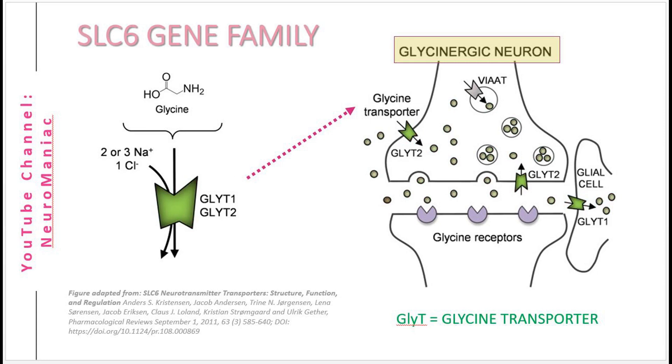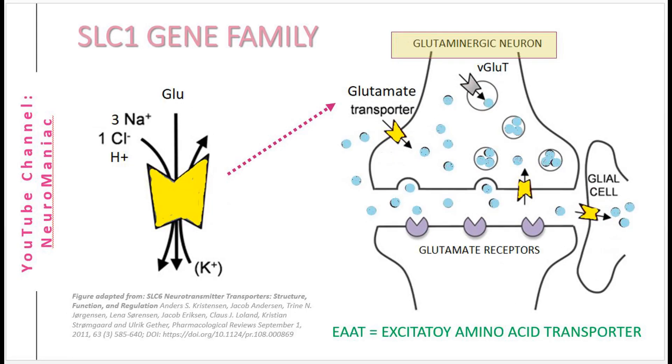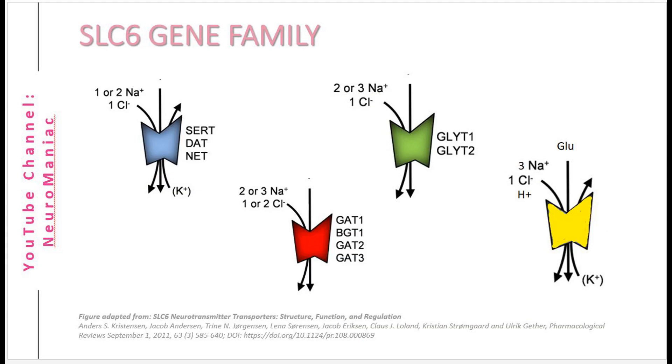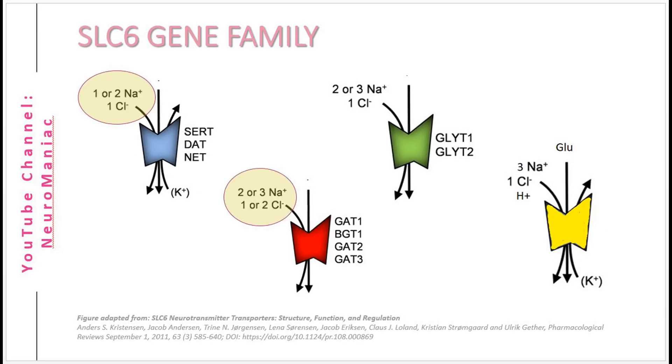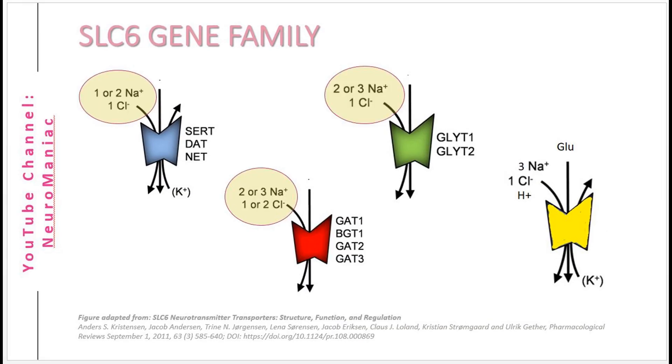On the other hand, the SLC1 is for the reuptake of glutamate via E-AAT transporters. As the gene family name suggests, solute carrier, you can see these transporters are sodium and chloride coupled.